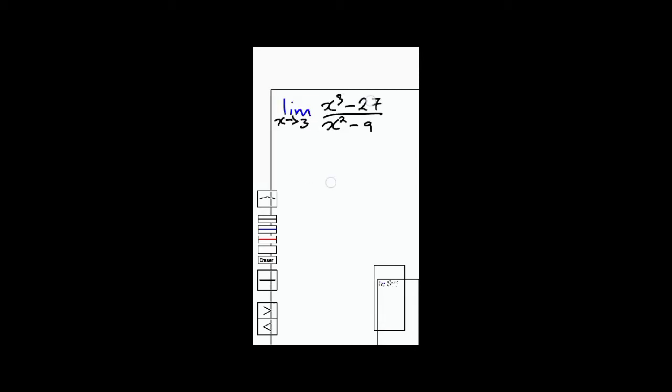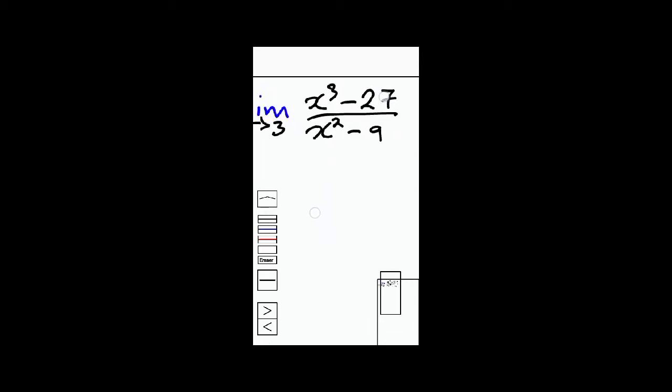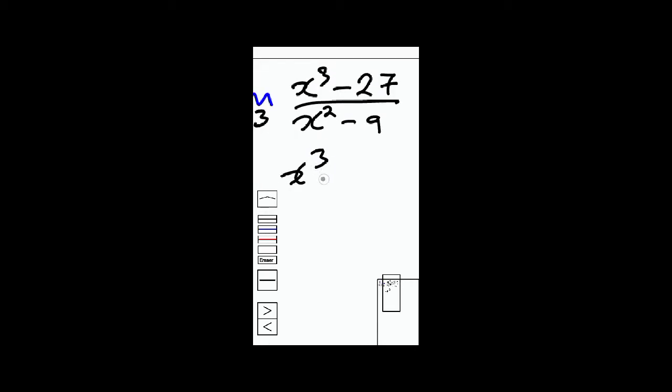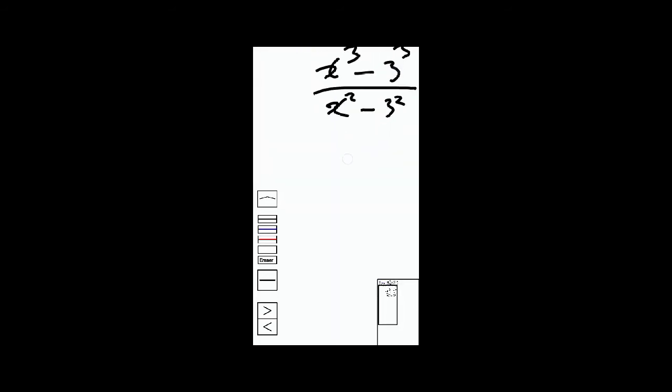The first thing that you can do is express 27 as 3 to the power 3, and express 9 as 3 squared.